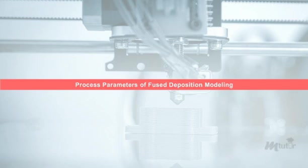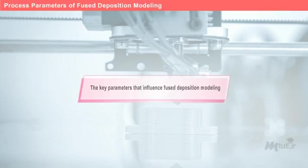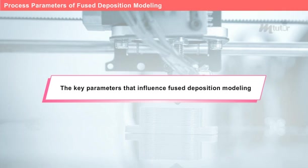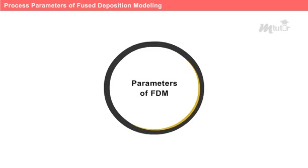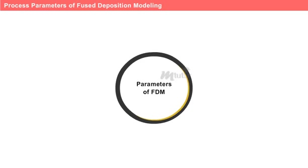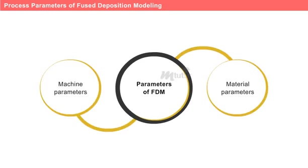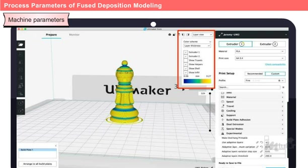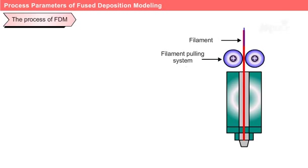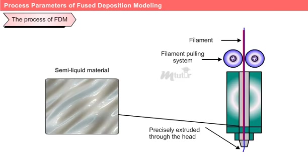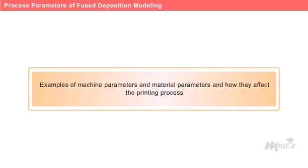Process parameters of fused deposition modeling. Let's discuss the key parameters that influence fused deposition modeling. These parameters fall into two main categories: machine parameters and material parameters. Machine parameters are the settings we specify in the slicing software when generating the g-code files for the 3D printer. Material parameters are the properties of the filament material being extruded through the nozzle.